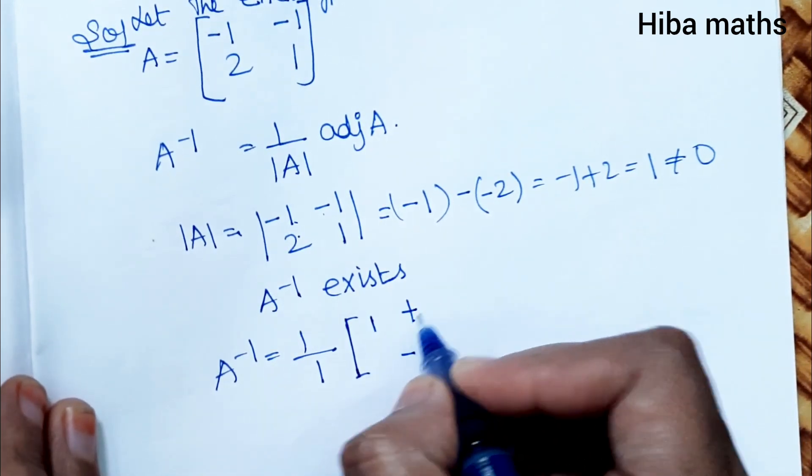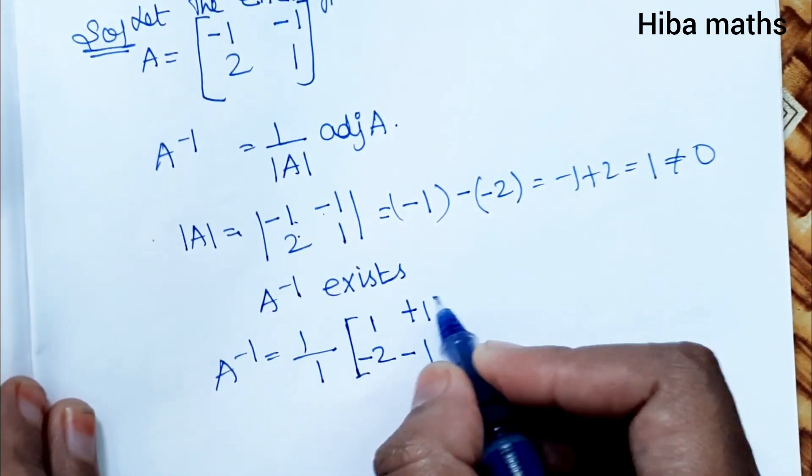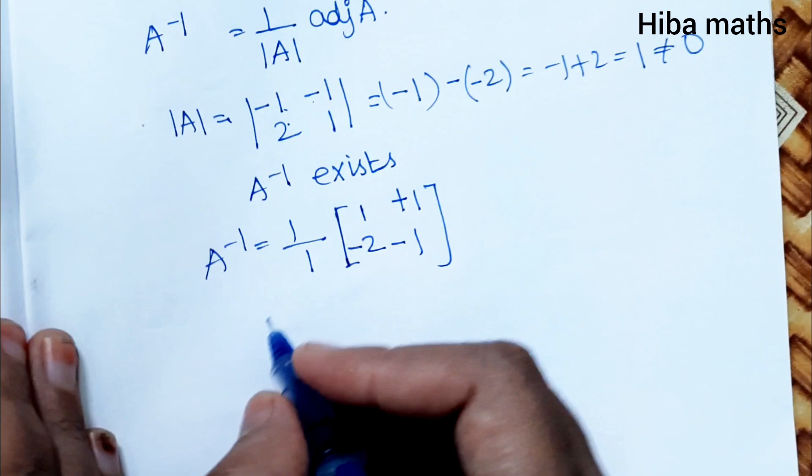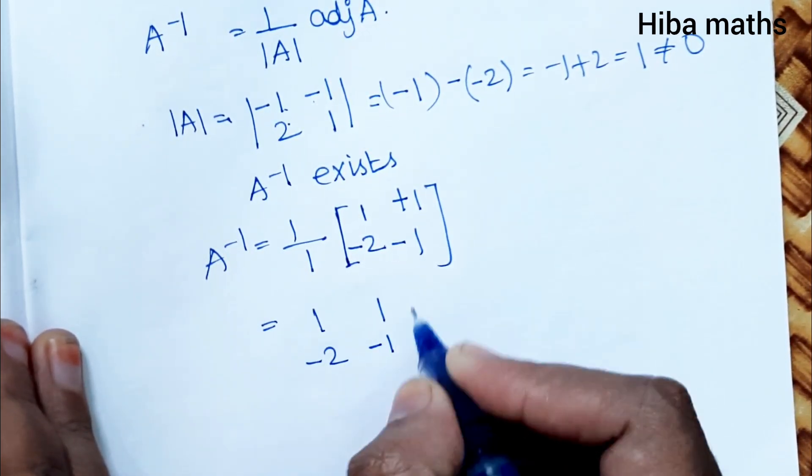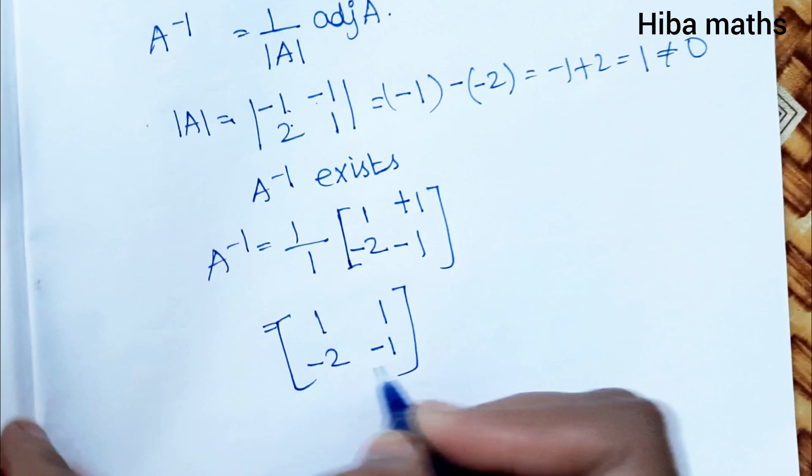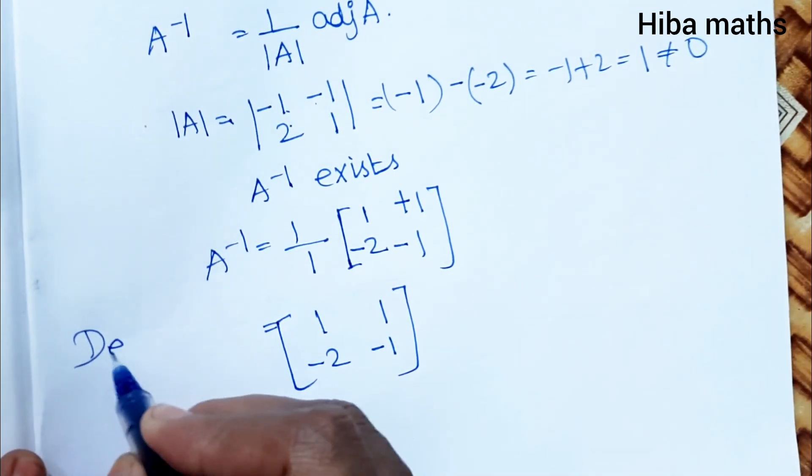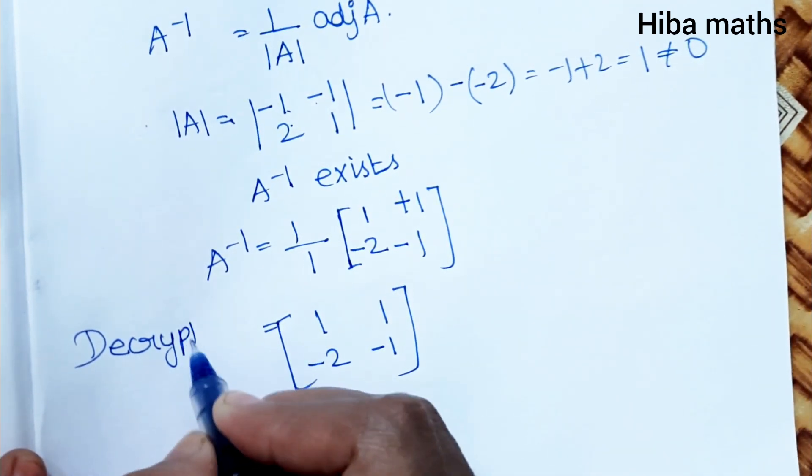So A inverse equals [1, 1; -2, -1]. This is the decryption matrix.